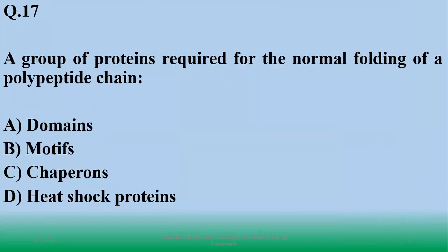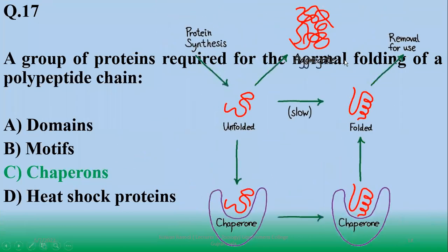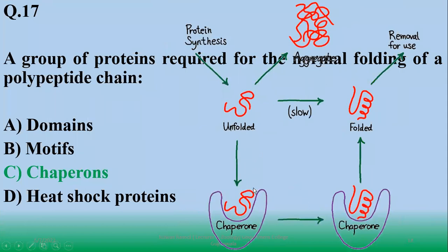A group of proteins required for the normal folding of a polypeptide chain - they are chaperones. So right option is C, which are normal folding required proteins.